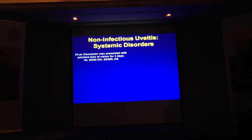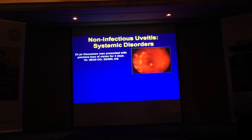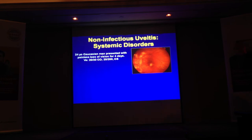This patient is a 24-year-old Caucasian man who presented with loss of vision for four days. Vision is 20/30 and 20/200. Looking at this left eye — how long do you think this process has been going on? Longer than four days. How do you know? Fibrosis. You see fibrosis on the optic nerve, which takes months to develop. Why did the patient suddenly have loss of vision? Macular involvement. The process has clearly been there for a while.